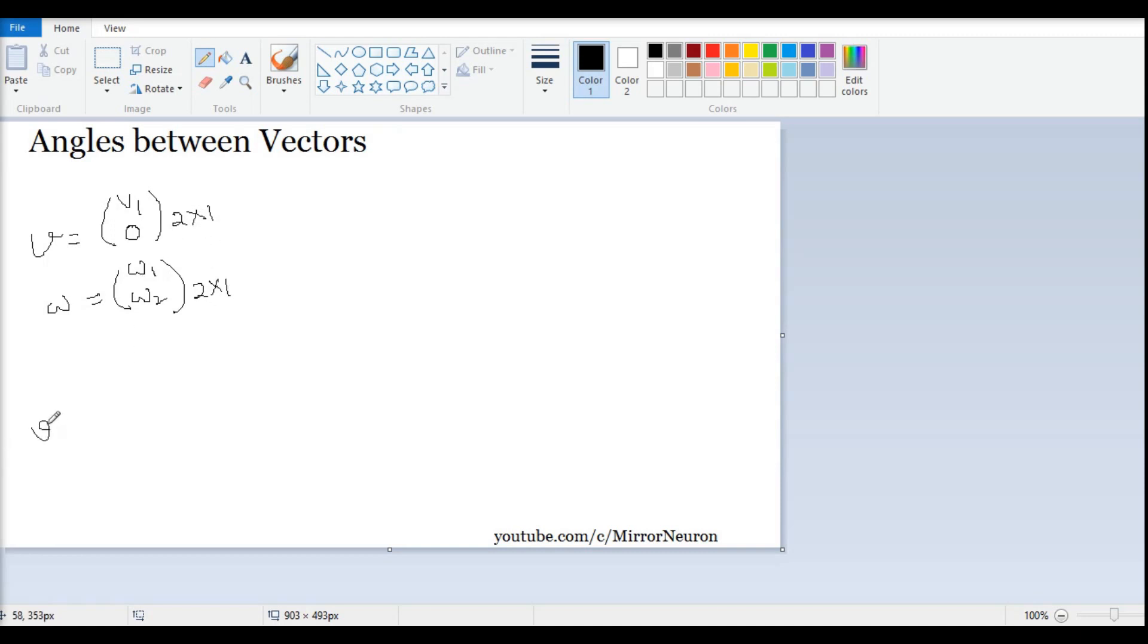If I have to take the multiplication between these two vectors, then what I need is basically to transpose this. Remember, we have to make sure that the inner labels should match for multiplication. I can simply write this as V vector transposed times W. The transpose is nothing but rows become columns and columns become rows. In this case, my element would be V1 times W1 plus 0 times W2, which is the normal multiplication. This becomes V1 W1.